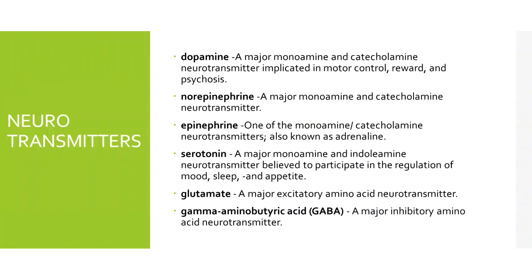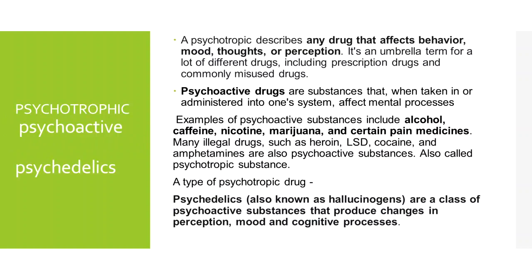You can also see the functions of every neurotransmitter and the location where it is released. Dopamine is a major monoamine and catecholamine neurotransmitter implicated in motor control, reward, and psychosis — known as the reward or pleasure neurotransmitter. Norepinephrine and epinephrine are also monoamine catecholamine neurotransmitters; epinephrine is also known as adrenaline. Serotonin is a major monoamine neurotransmitter believed to participate in the regulation of mood, sleep, and appetite.